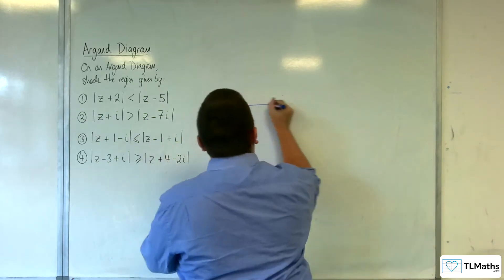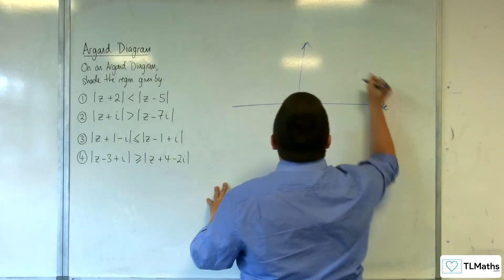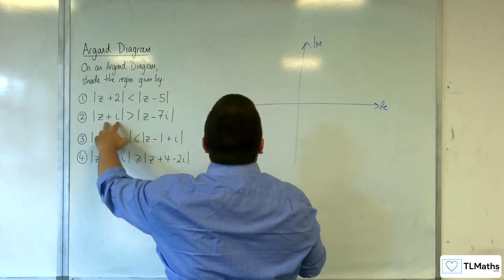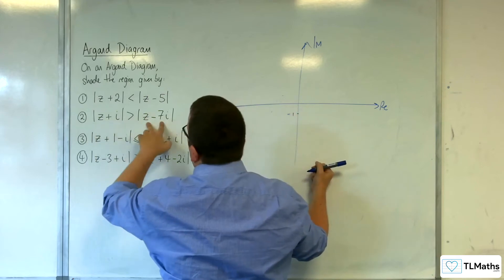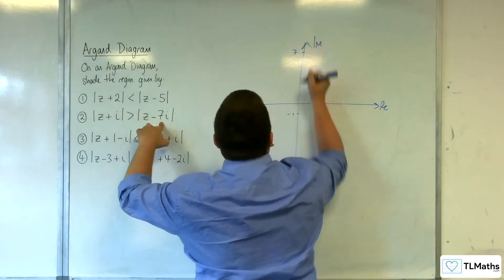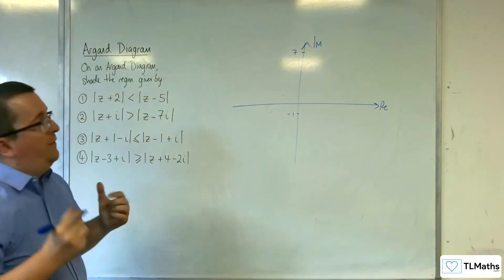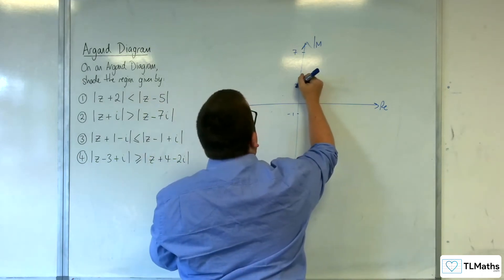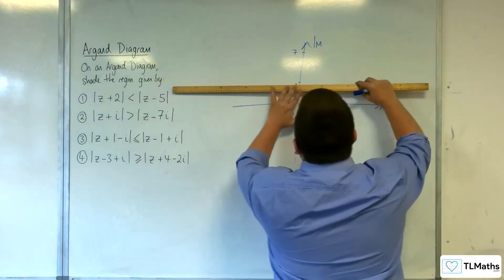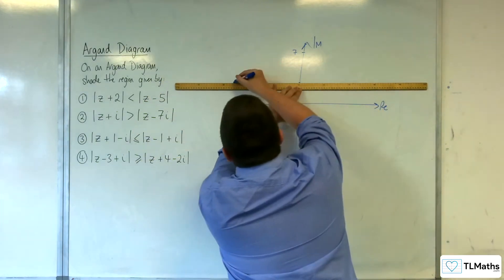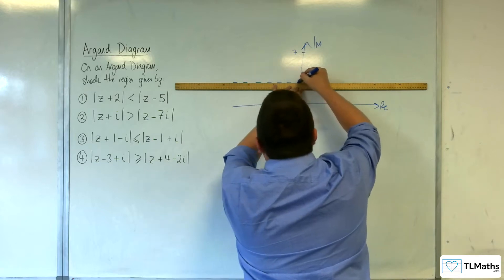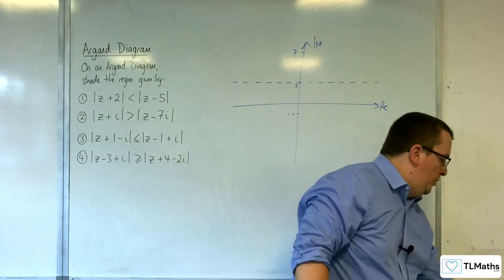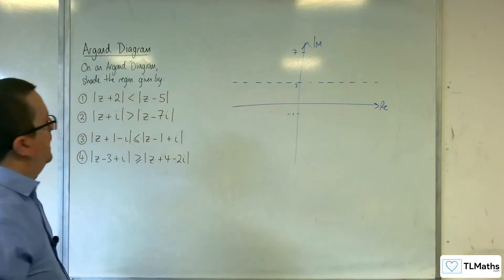Number 2. So, real and imaginary. We've got z plus i, so we're at minus i — minus 1 on the imaginary axis. And this one is at 7i, so 7 on the imaginary axis. So 7 plus minus 1 is 6, divided by 2 is 3, so 3 is where we would be, and that would be a horizontal line. And it's a dotted line.